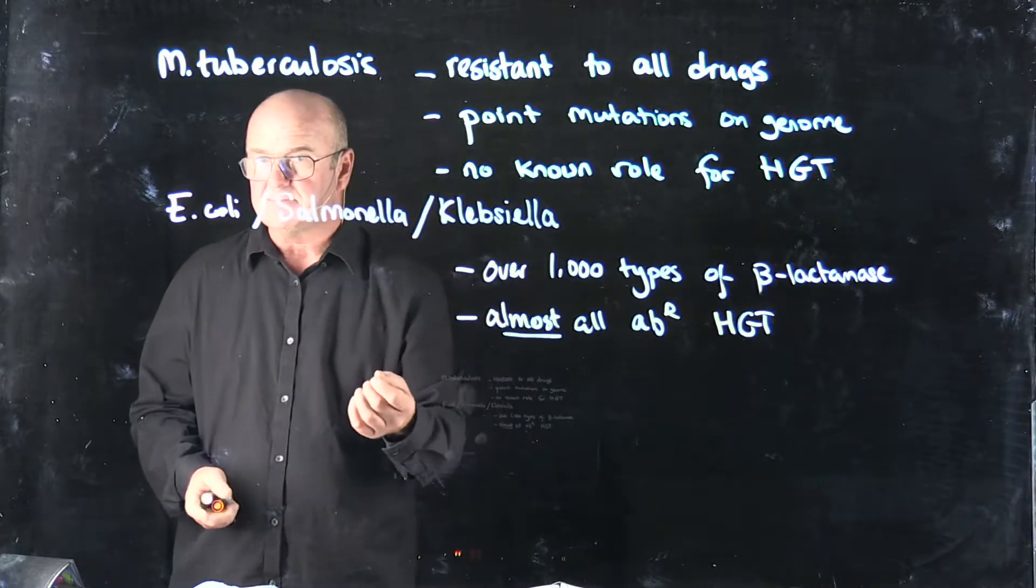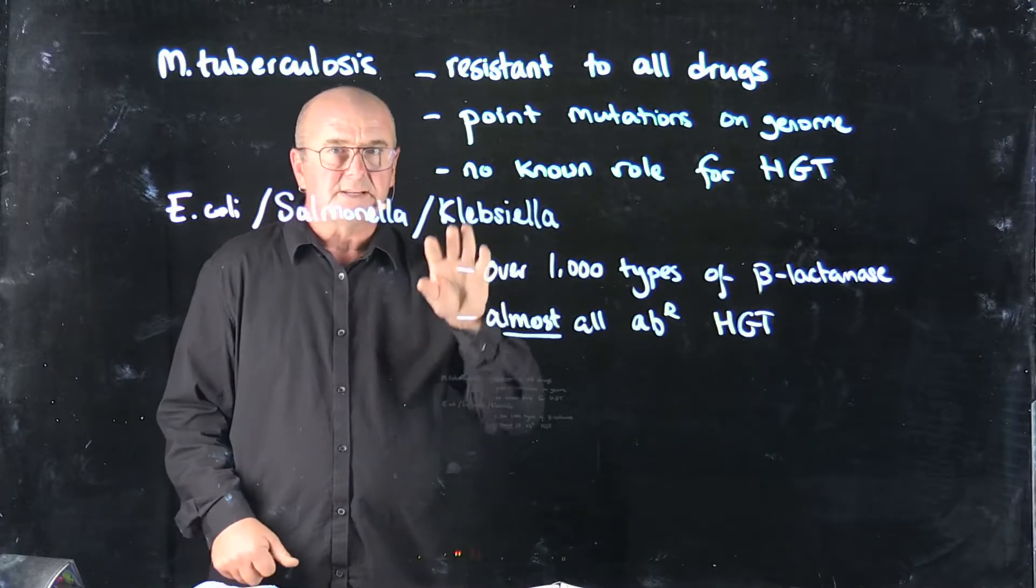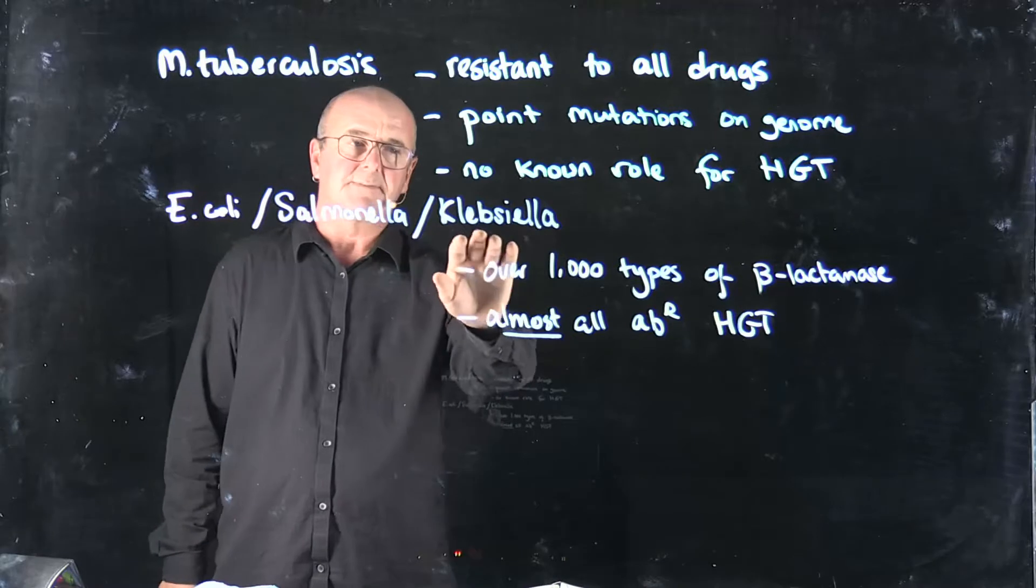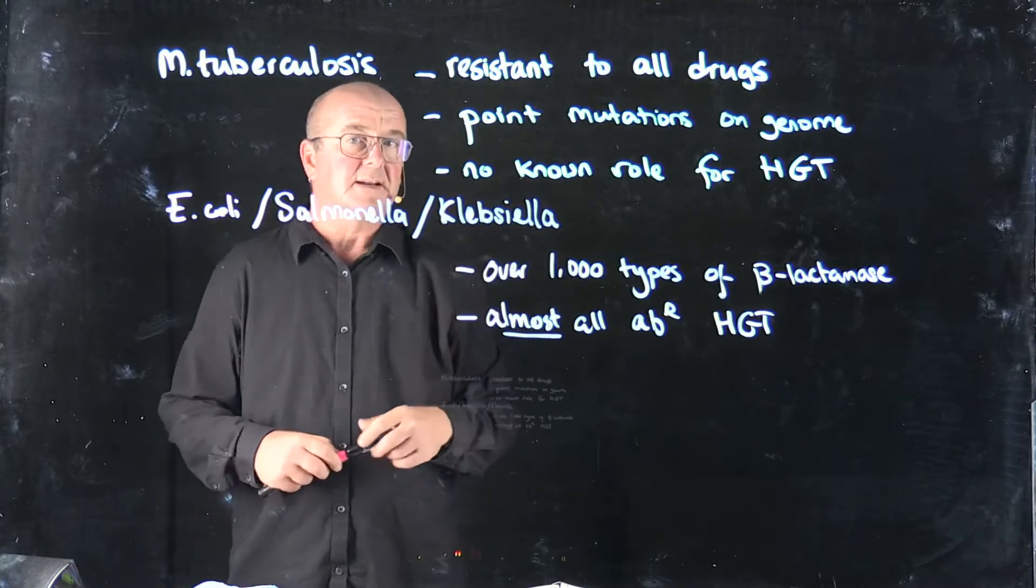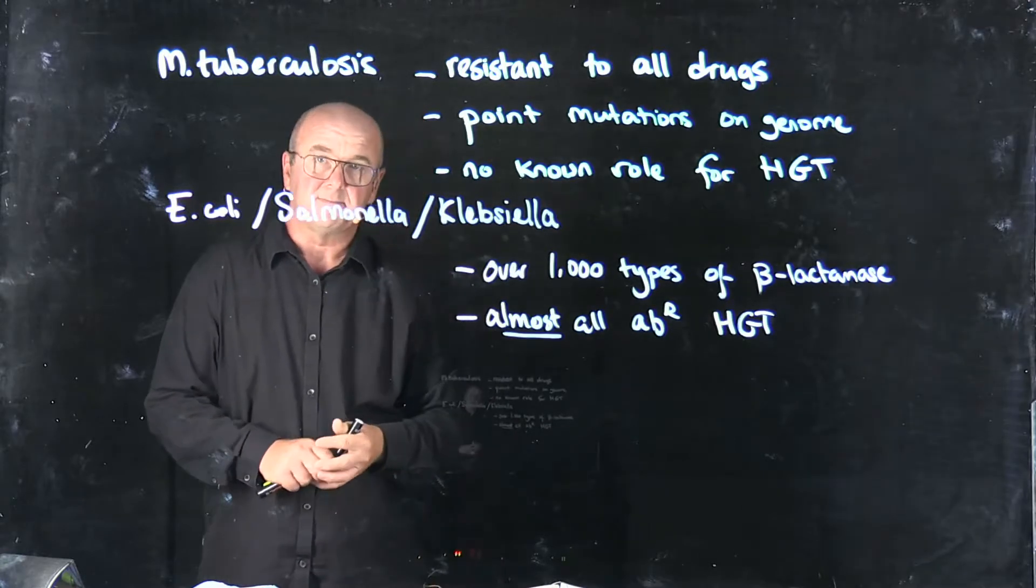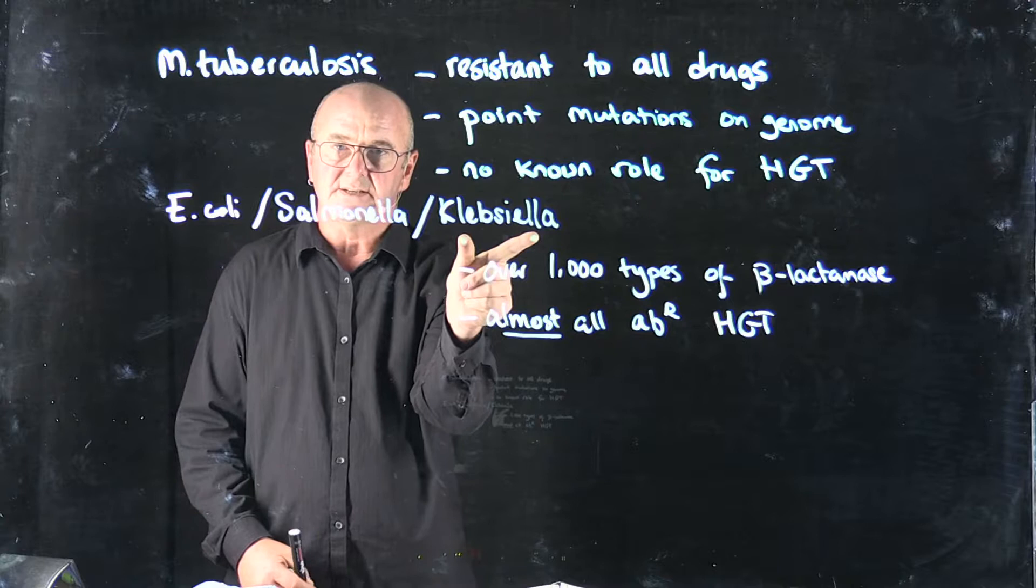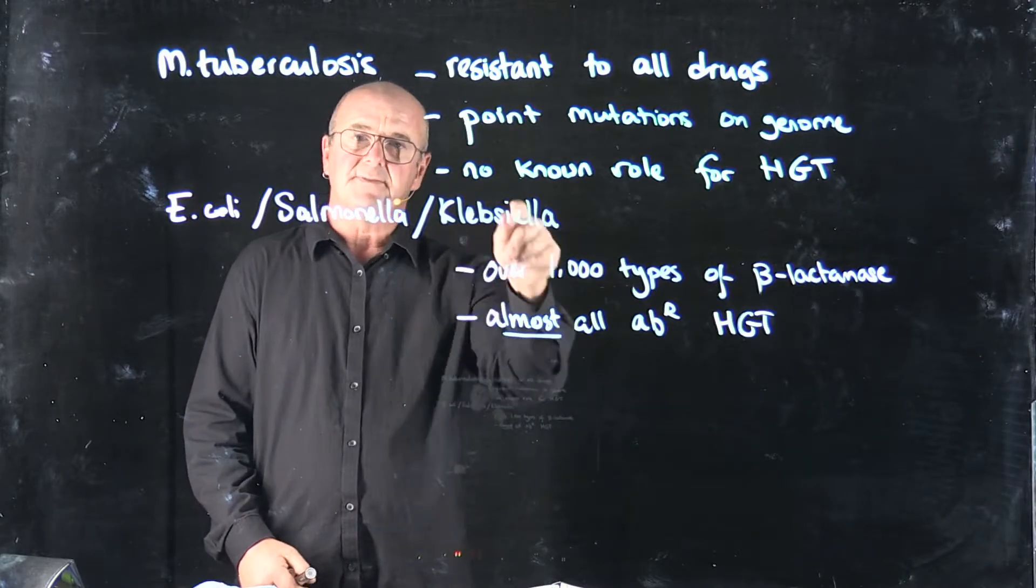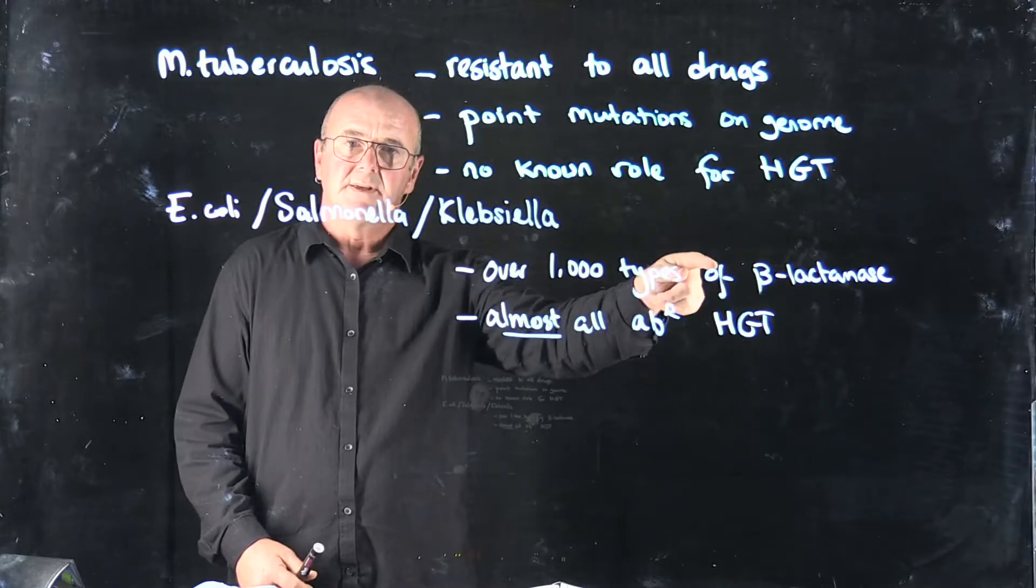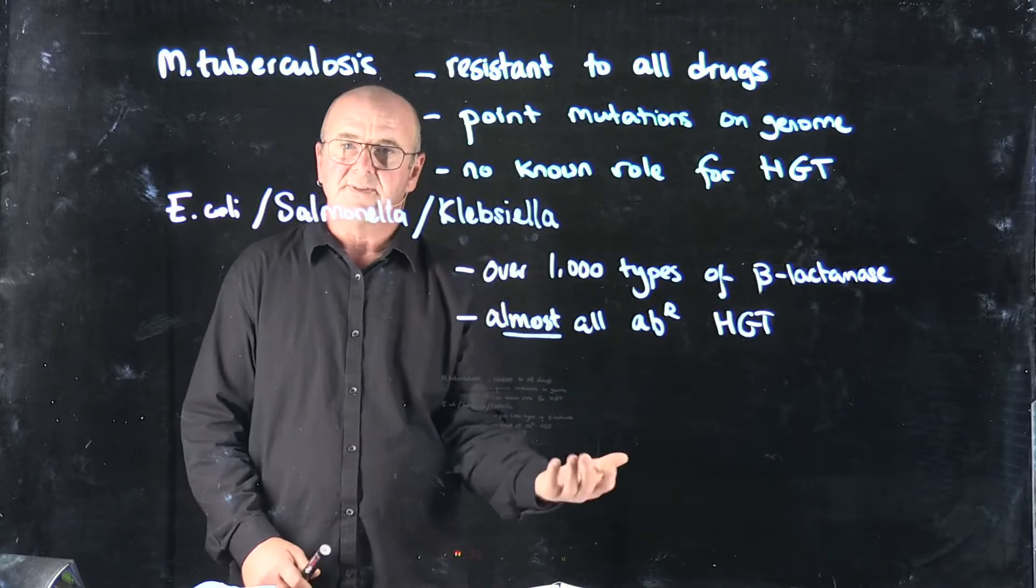Especially plasmids, occasionally maybe phages, but there's mechanisms where E. coli can share with Salmonella, can share with Klebsiella, and so on. In fact, the really bad Klebsiella, the carbapenem-resistant Klebsiella, the gene that provides the resistance to carbapenem is encoded on a plasmid that can spread from cell to cell to cell. As long as one cell has that plasmid, all of the others can get it.